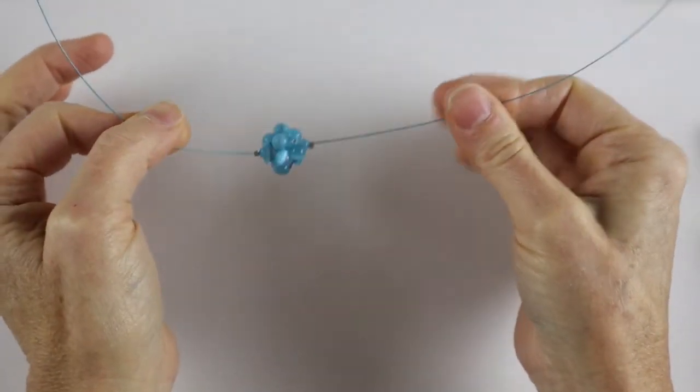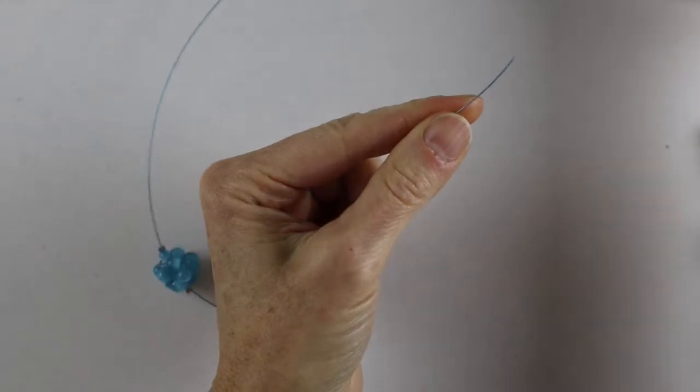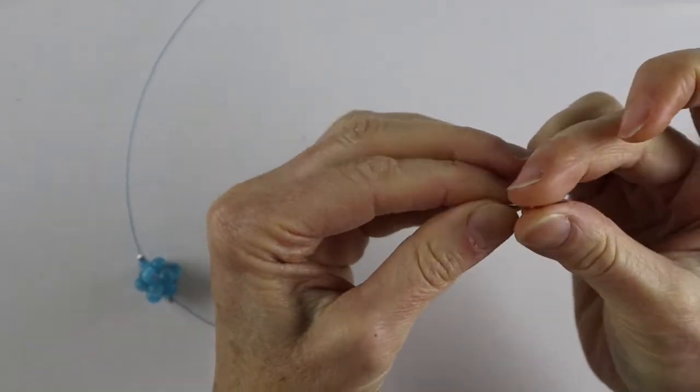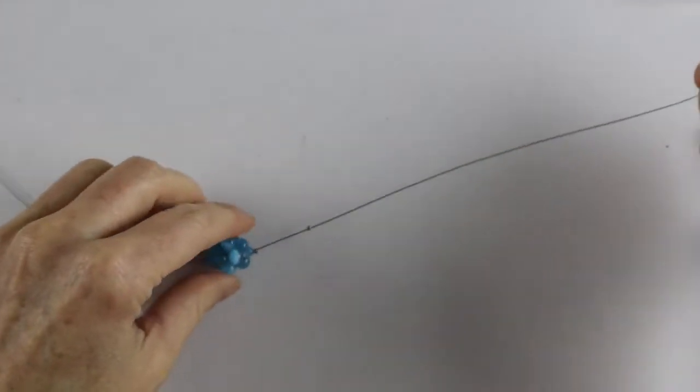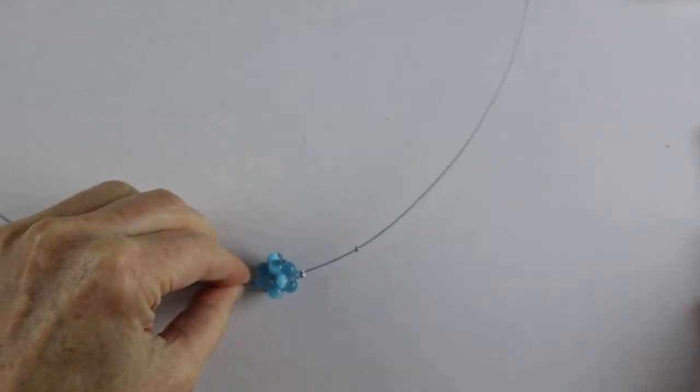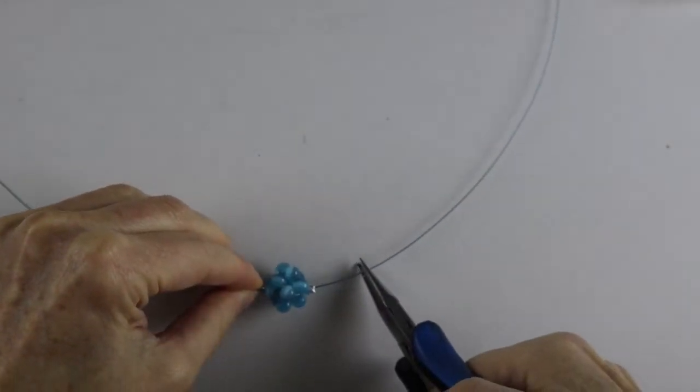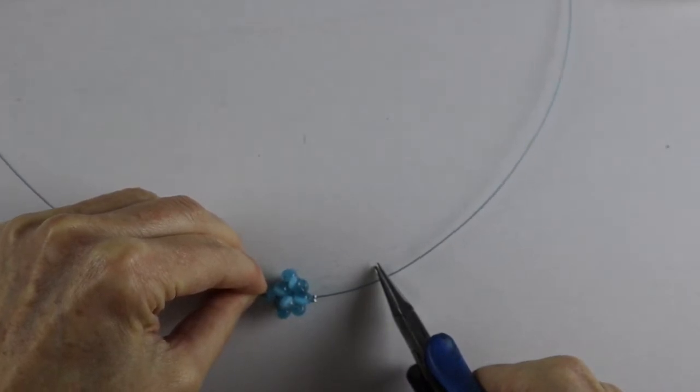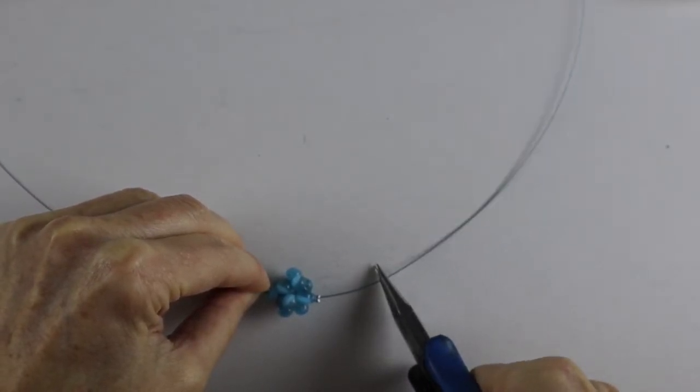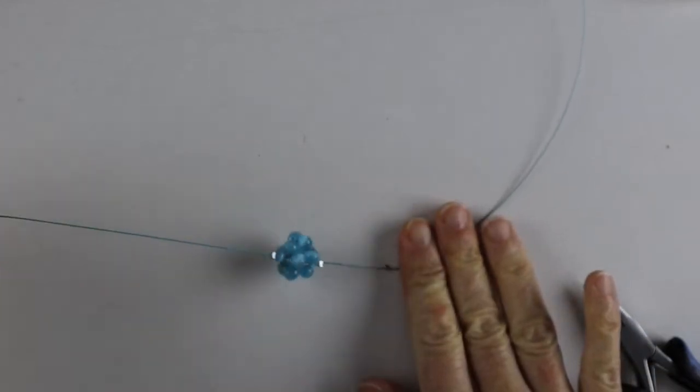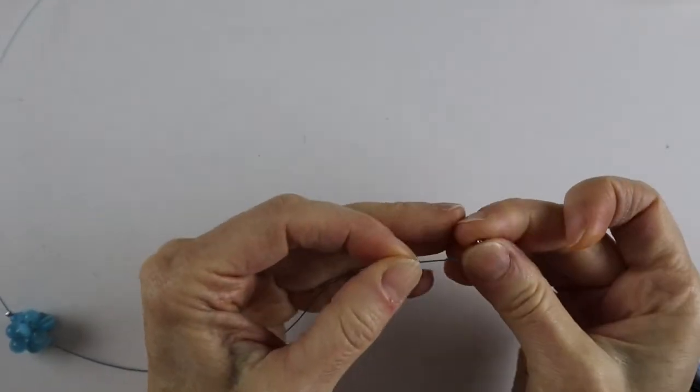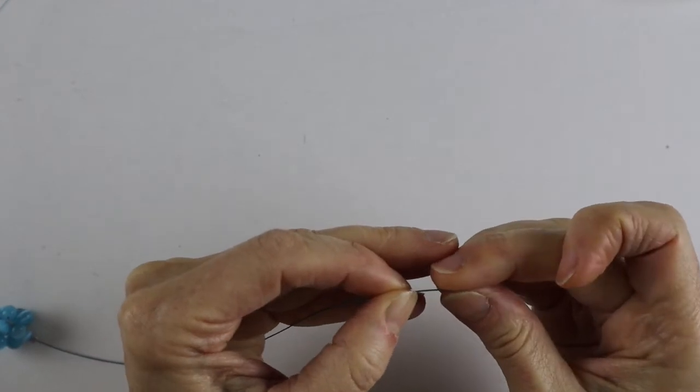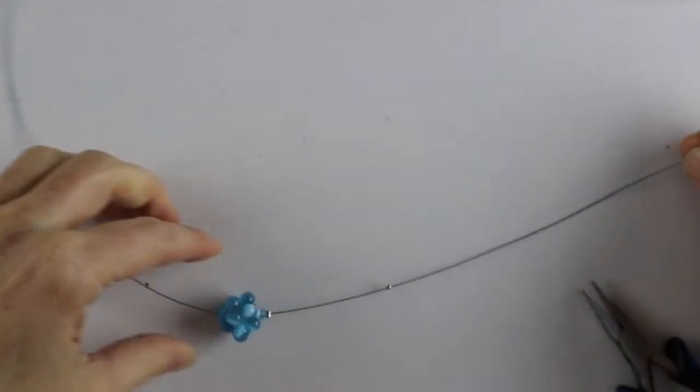So once you have the cluster secured in place, you're going to add your crimp beads and space it about an inch to an inch and a quarter away from the center. You're going to pinch it in place, and then you're going to do the same on the other side so you'll have them equally spaced apart on the tiger tail.